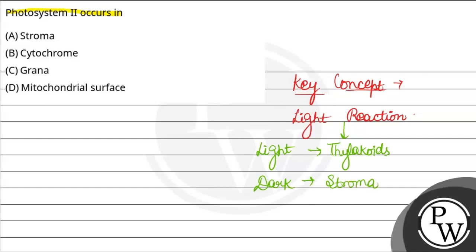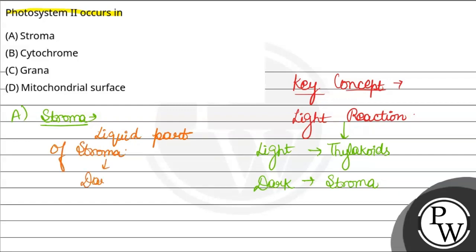So question में पूछा गया है कि Photosystem II कहाँ होता है? Option 1st दिया हुआ है stroma. Stroma क्या होता है? It is the fluid liquid part of chloroplast. Chloroplast का fluid वाला part होता है, that is stroma — यहाँ पर dark reaction होती है photosynthesis की, not light reaction.